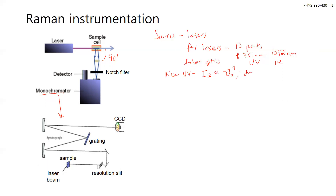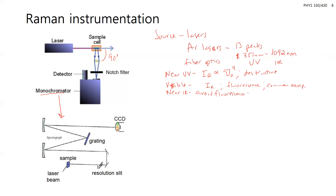If you work in the visible, you're in the middle range with higher intensities compared to IR, but the drawback is fluorescence can interfere with your detected signal. Visible light has the benefit that there's a lot of common equipment for working with it. In the near IR, you can avoid fluorescence and sample damage, but you'll have lower intensity — basically the inverse of the near UV and visible.